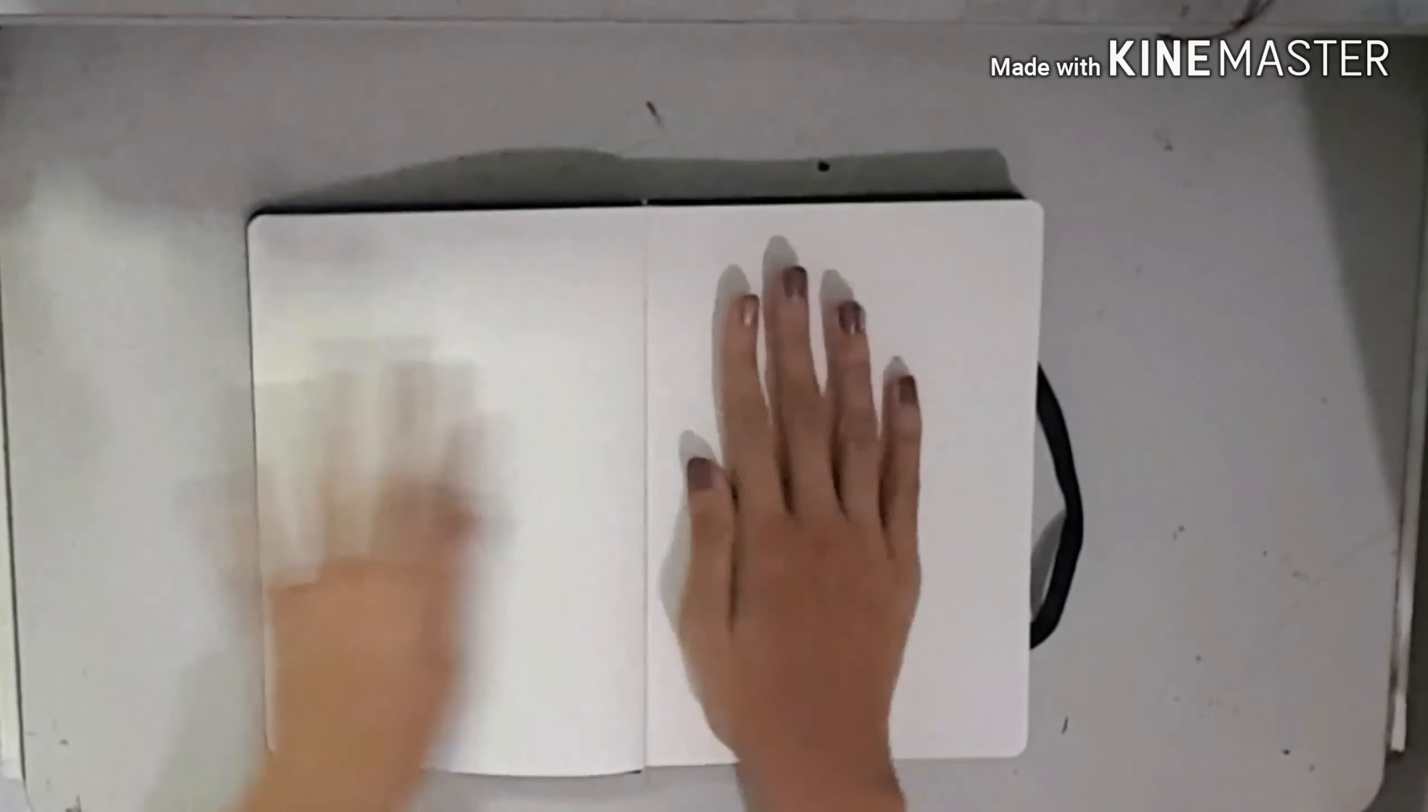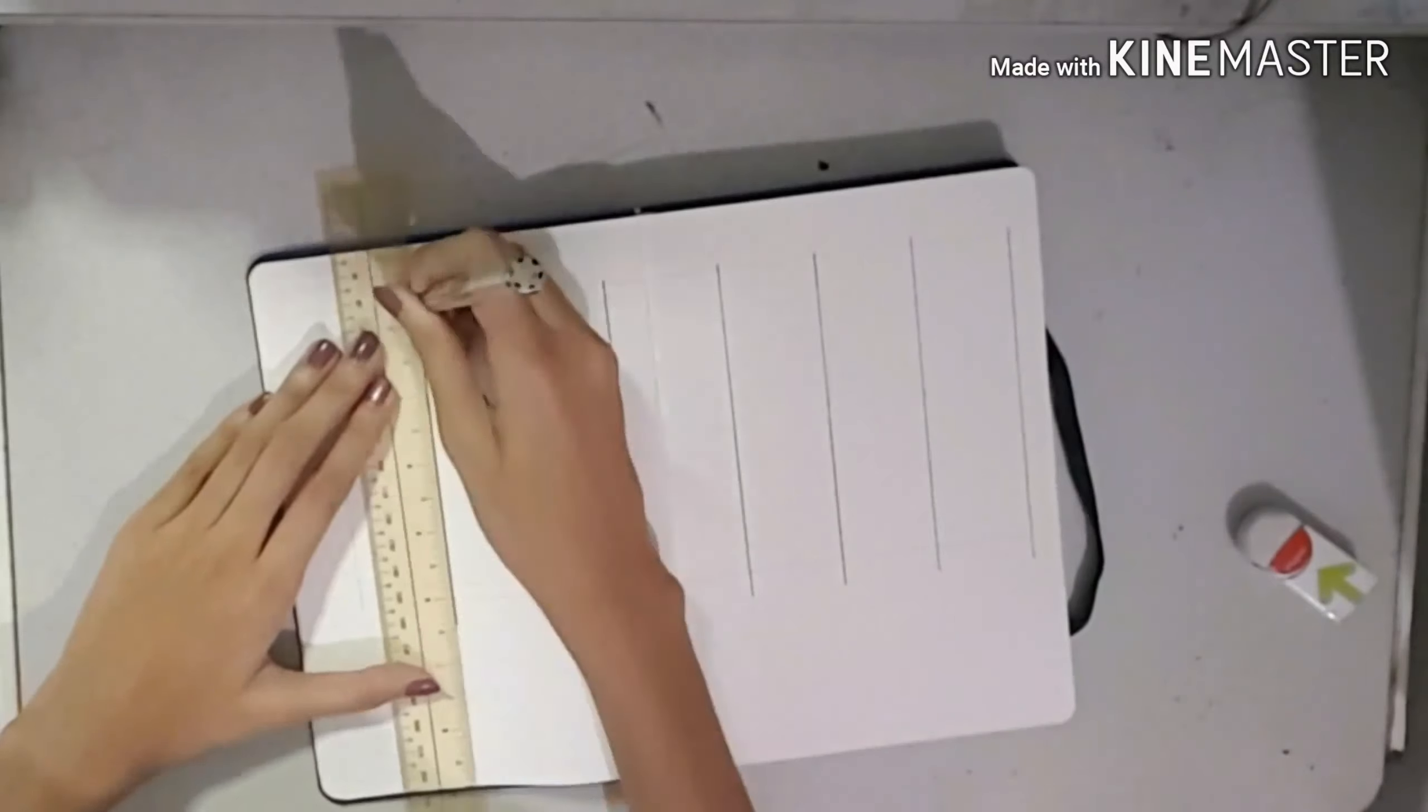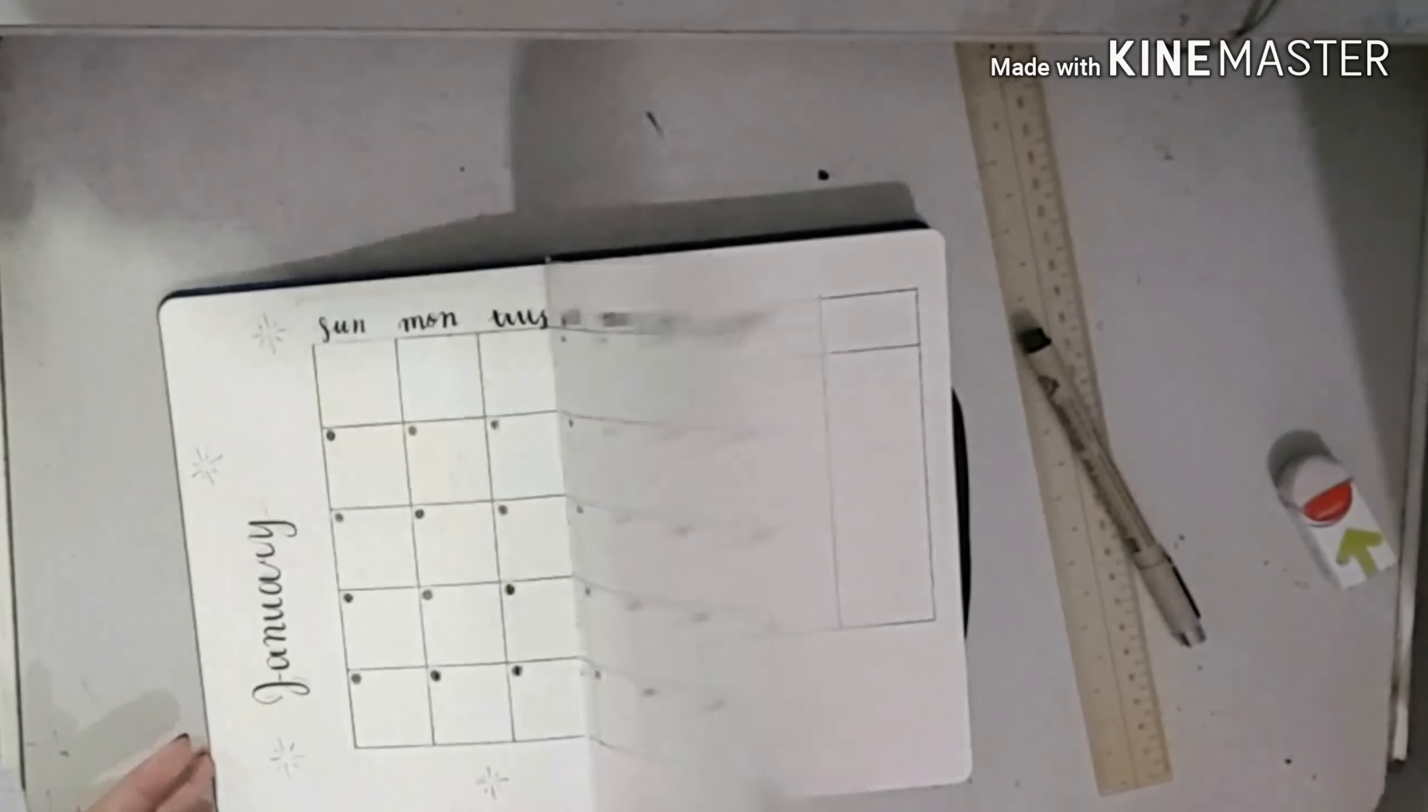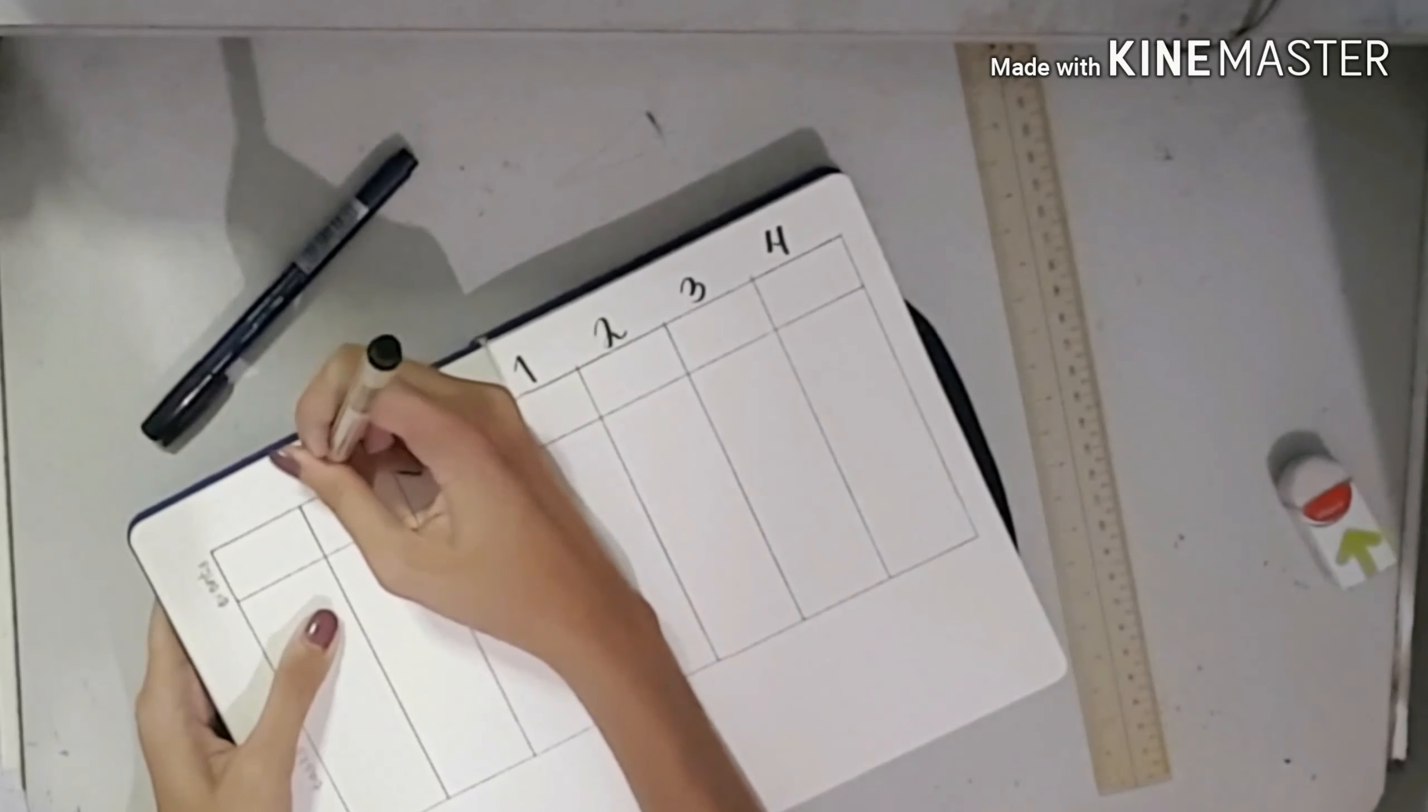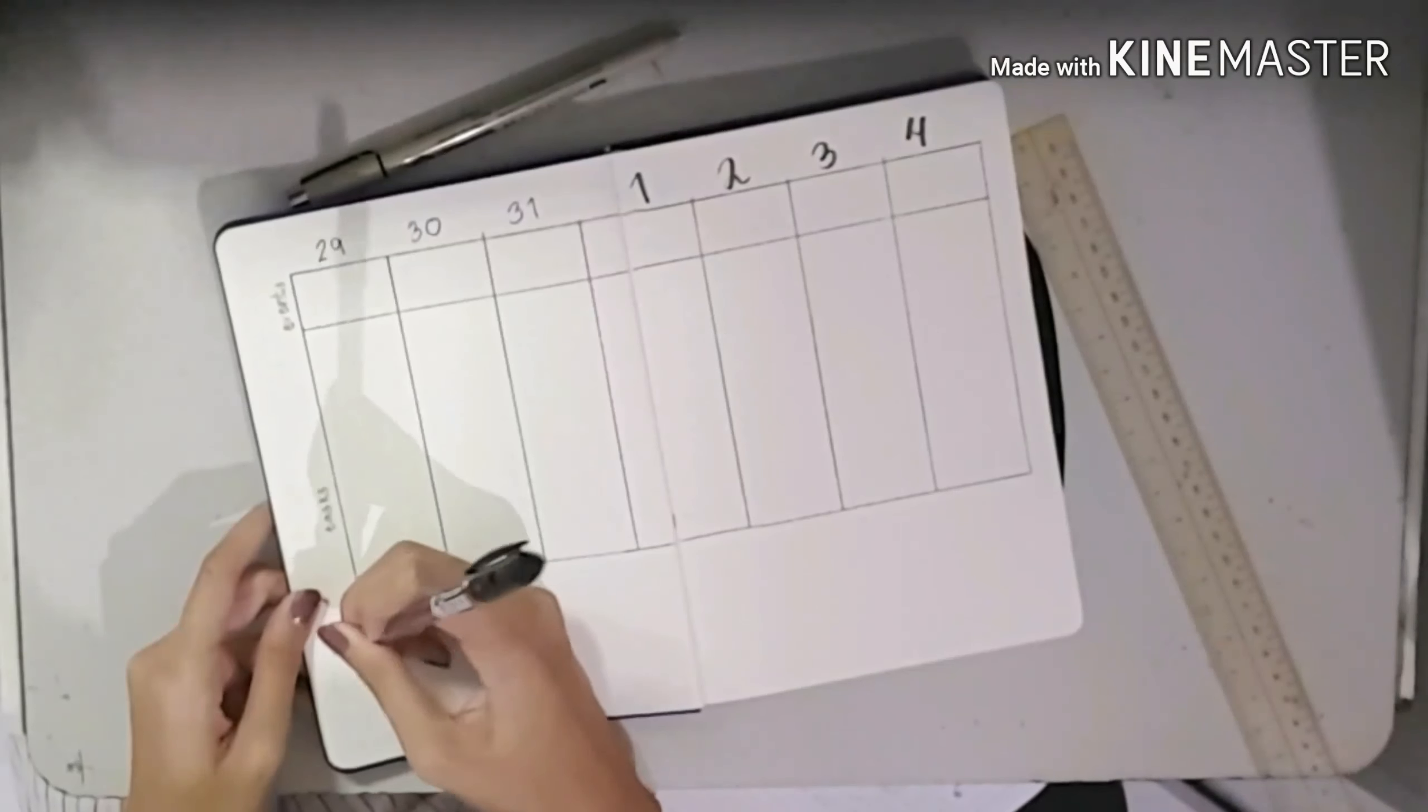Finally, we're on to the first weekly spread for January. I'm making seven charts divided with a small box at the top and a longer one at the bottom. The top one is for events and the bottom is for tasks. I actually made a mistake because the first week starts in December, so I wrote out December 29, 30, and 31 with a fine liner.